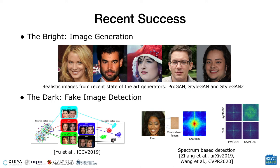Generative modeling achieves great success in recent years. Some examples are shown where increasingly better images can be generated from Progressive Growing GAN, StyleGAN, and StyleGAN2. These techniques allow us to manipulate images or videos and produce realistic results.